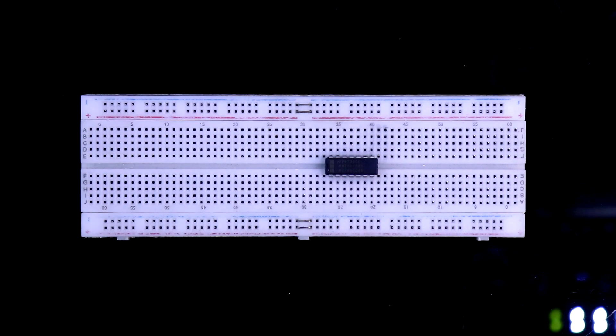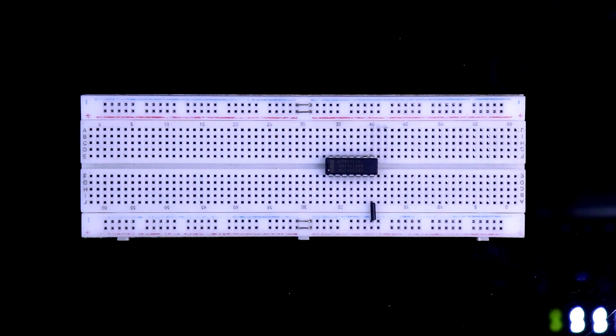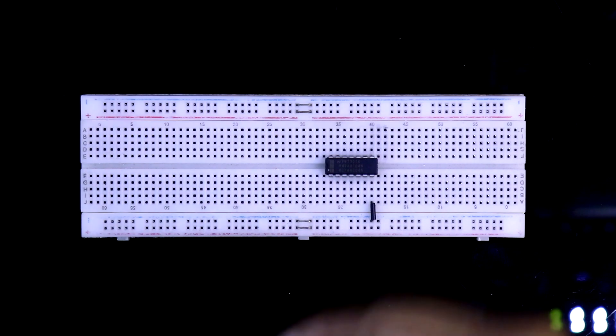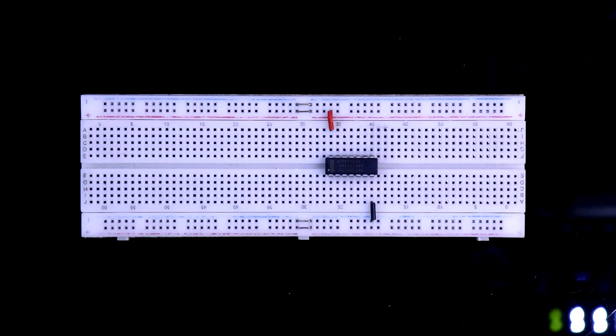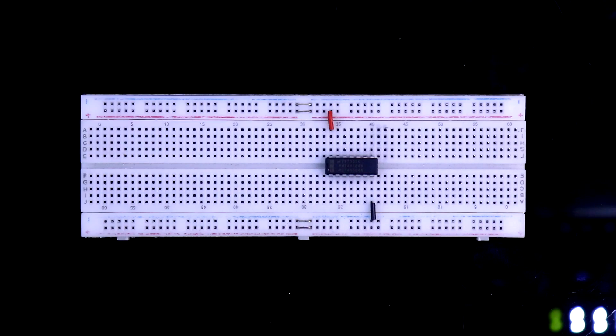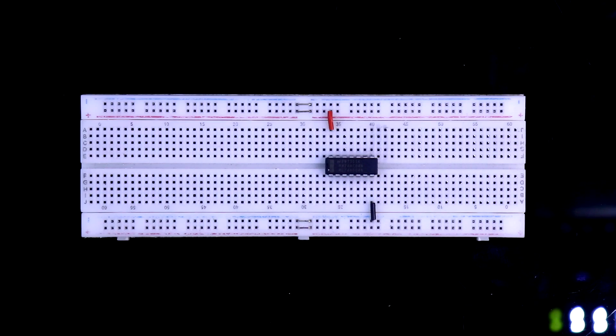Here is IC 7404. Pin number 7 is ground pin, so it is connected to ground. And pin number 14 is VCC, so it is connected to positive rail. I already explained about its pin diagram and how to connect the input and output. So in this video I am not going to explain that. Video link in description below.